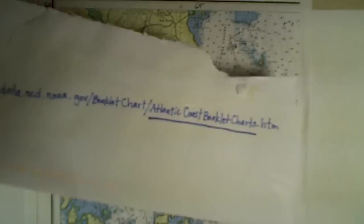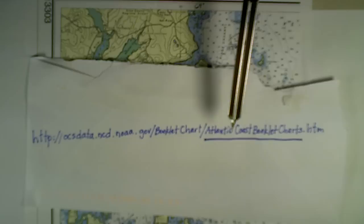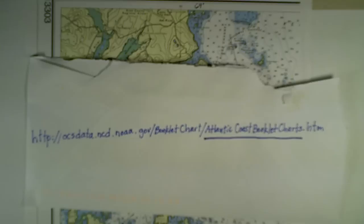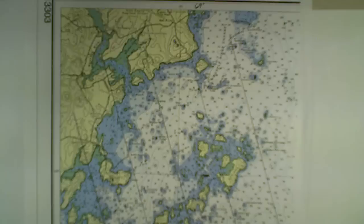My source for charts is the following. You can pause the video and copy, or you can just Google Atlantic Coast booklet charts and that will bring you right into the source. This happens to be chart number 13303. It's an area off South Thomas in Maine in the Mussel Ridge Island archipelago.